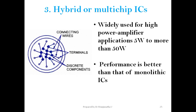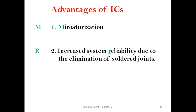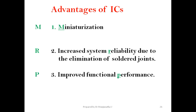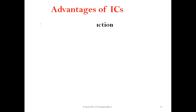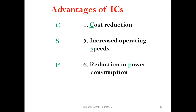The performance of hybrid ICs is better than that of monolithic ICs. The advantages of ICs include miniaturization, increased system reliability due to elimination of solder joints, improved functional performance, cost reduction, increased operating speeds, and reduction in power consumption. All these advantages can be remembered with the mnemonic MRP CSP. Thank you for watching this video.